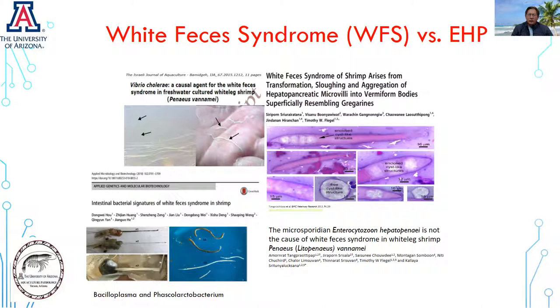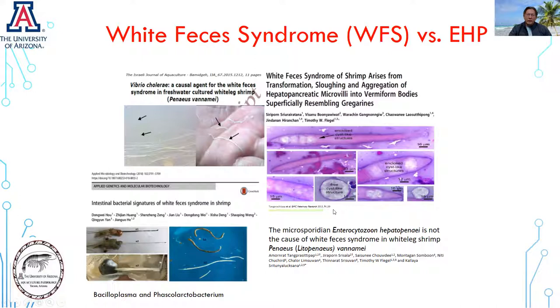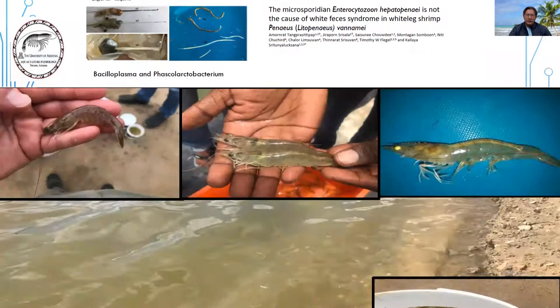Regarding the White Feces Syndrome, several studies have been focused on studying the causative agent. There are some studies in which Vibrio cholerae has been reported as the causative agent, along with some other enteric bacteria. Some other research has been focused on vermiform bodies that resemble gregarines as the causative agent or associated with White Feces Syndrome. And there are some reports which confirm that EHP is not the causative agent of White Feces Syndrome.